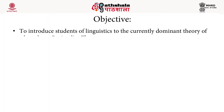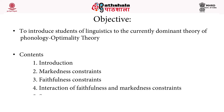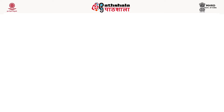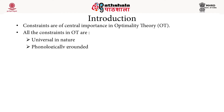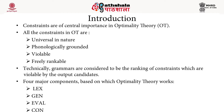In this module we are going to focus on the major tenet or the core of OT, which is the constraint set. We are going to talk about the two types of constraints: markedness constraints and faithfulness constraints. Markedness constraints are the well-formedness constraints and faithfulness constraints are the identity constraints. Constraints are of central importance in OT; all constraints are universal in nature, phonologically grounded, violable, and freely rankable. Grammars are considered to be the ranking of constraints which are violable by the output candidates.